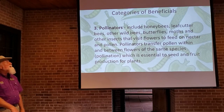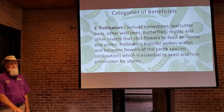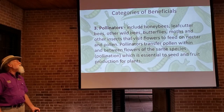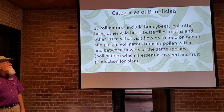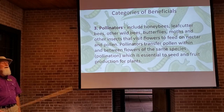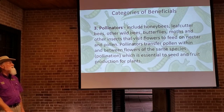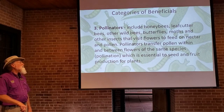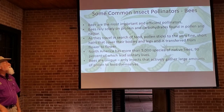The third category of beneficials are the pollinators — including honeybees, leafcutter bees, all kinds of wild bees, butterflies, moths, and various other insects that land on flowers to feed on nectar and pollen. Some adults of the predatory insects we already discussed, such as the hoverfly, are also pollinators.